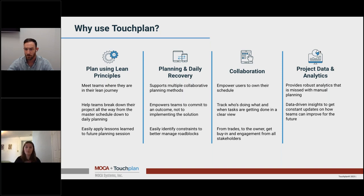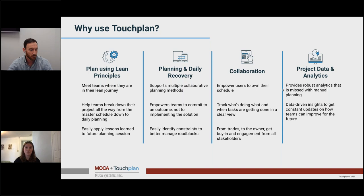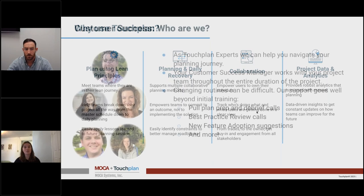With TouchPlan, teams can collaborate more and own their schedule. Teams can work together all at once to track who's doing what and when tasks are getting done, within a clear view. All users can see the schedule so they can identify what's going on for not only their specific role, but for the rest of the project as well. From trades to the owners, get buy-in and engagement from all stakeholders. TouchPlan also provides robust analytics that are missed in manual planning. Our dashboards allow you to dive deep into your project, identify pain points, and apply lessons learned in the future.